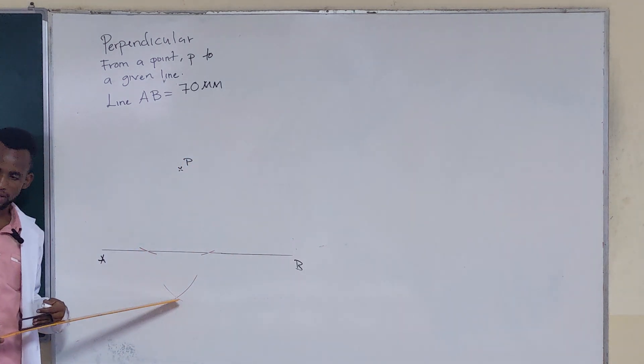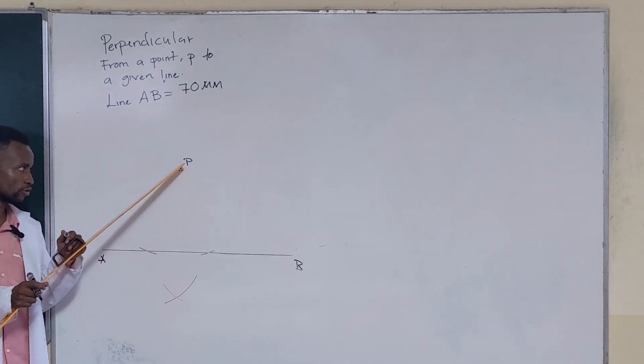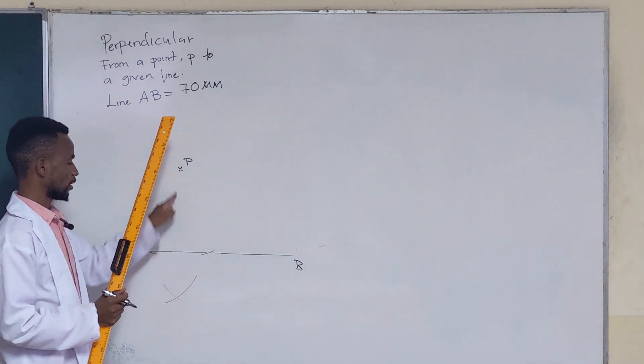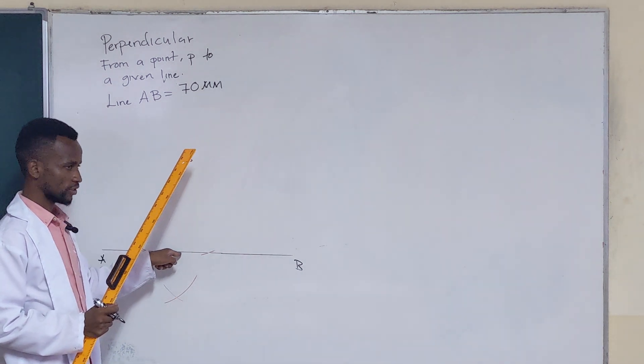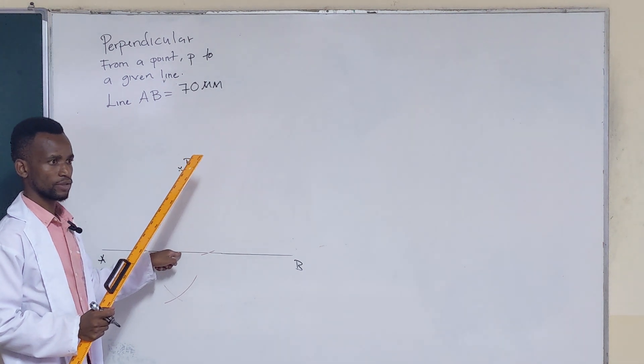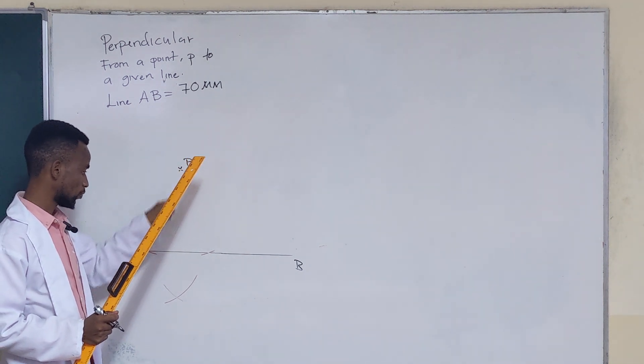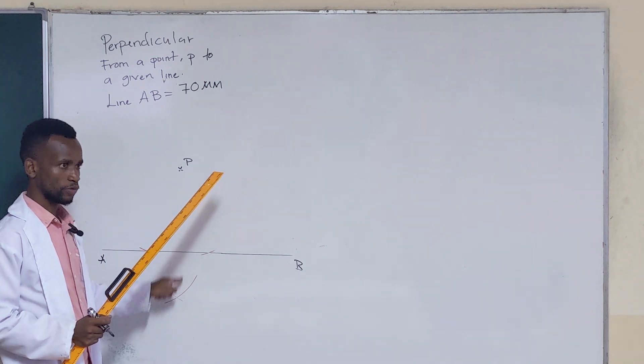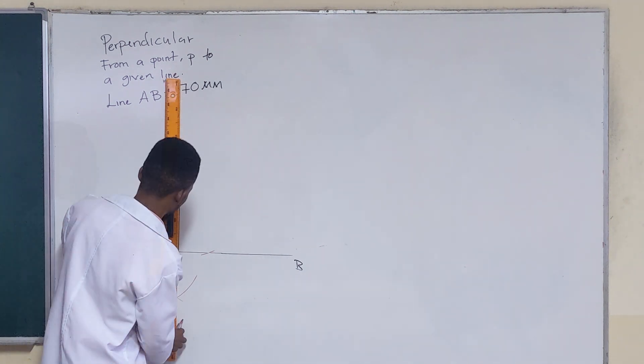And where the two arcs are meeting here, you draw a line from point P to this point, but the line has to end at this point here, a dark line. The dark line has to come from this point to that point. If you want to extend it through this side, it has to be faint. It should give you 90 degrees.